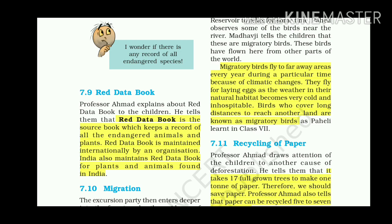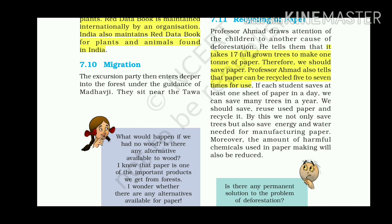Recycling of Paper: Professor Ahmed draws attention to another cause of deforestation — paper production. It takes 17 full-grown trees to make one ton of paper, so we should save paper. Paper can be recycled five to seven times. If each student saves at least one sheet of paper a day, we can save many trees in a year. By reusing and recycling paper, we save trees, energy, water, and reduce the amount of harmful chemicals used in paper manufacturing.